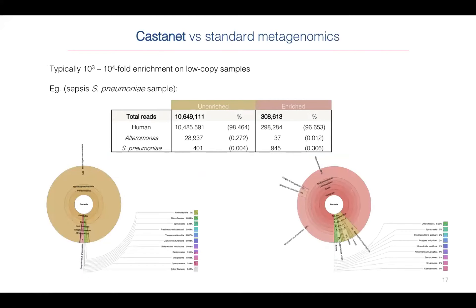So does it actually work? Comparing Castanet versus standard untargeted, unenriched metagenomics, there's a roughly thousand- to ten-thousand-fold enrichment of low copy number samples. As an example with one pneumococcus sample known to be positive from the lab: unenriched metagenomics requires ten and a half million reads — that's a lot, it's expensive — and yields only 400 pneumococcus reads alongside around 30,000 Ultrasonics reads, a known kit contaminant.